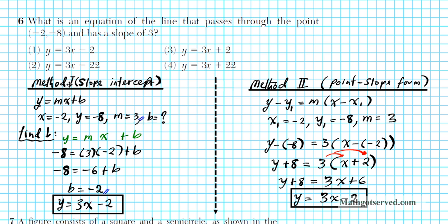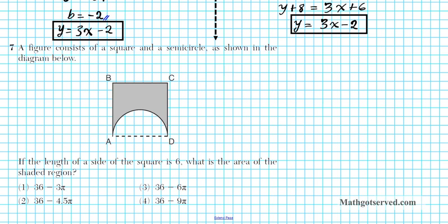Let's move on to question number 7. A figure consists of a square and a semicircle as shown in the diagram. If the length of a side of the square is 6, what is the area of the shaded region? We need to use our geometry tools here — the area of a square and the area of a circle. The side length s is equal to 6.